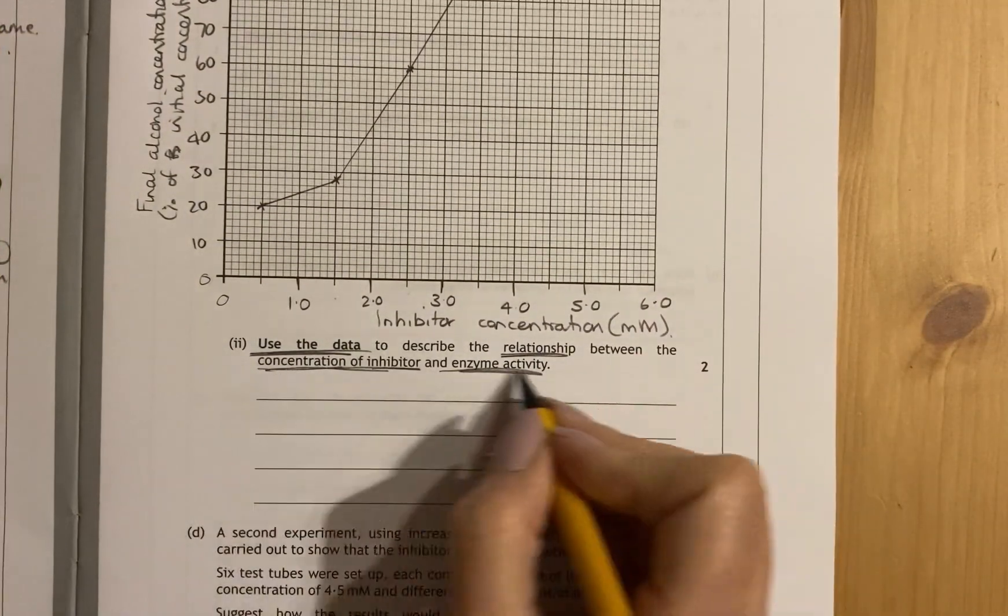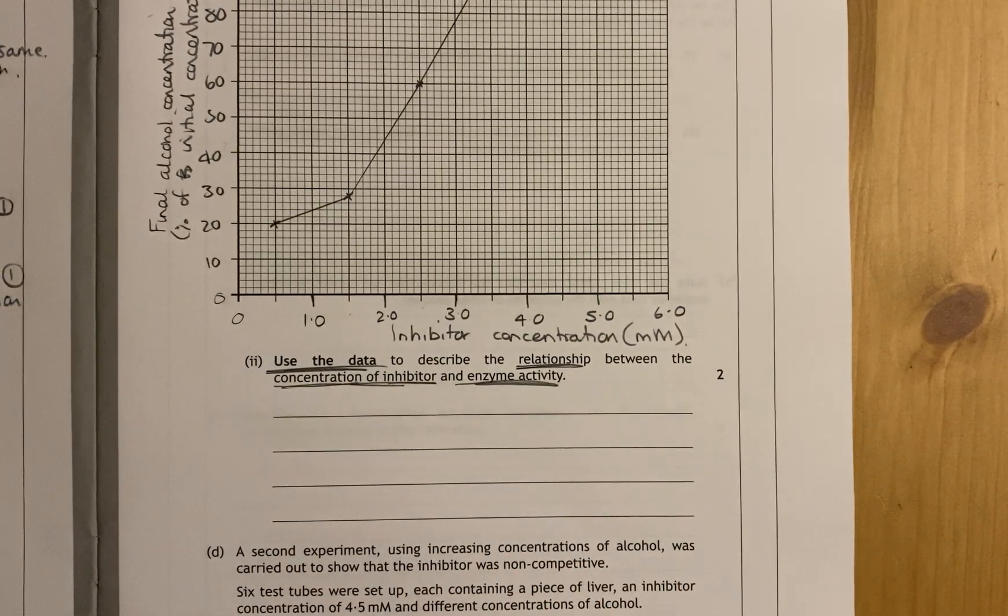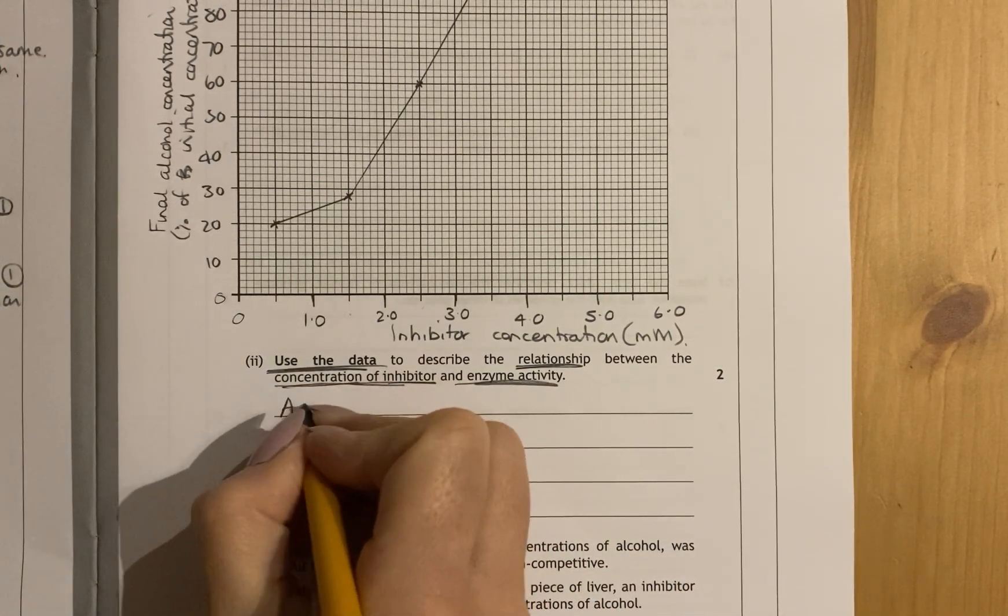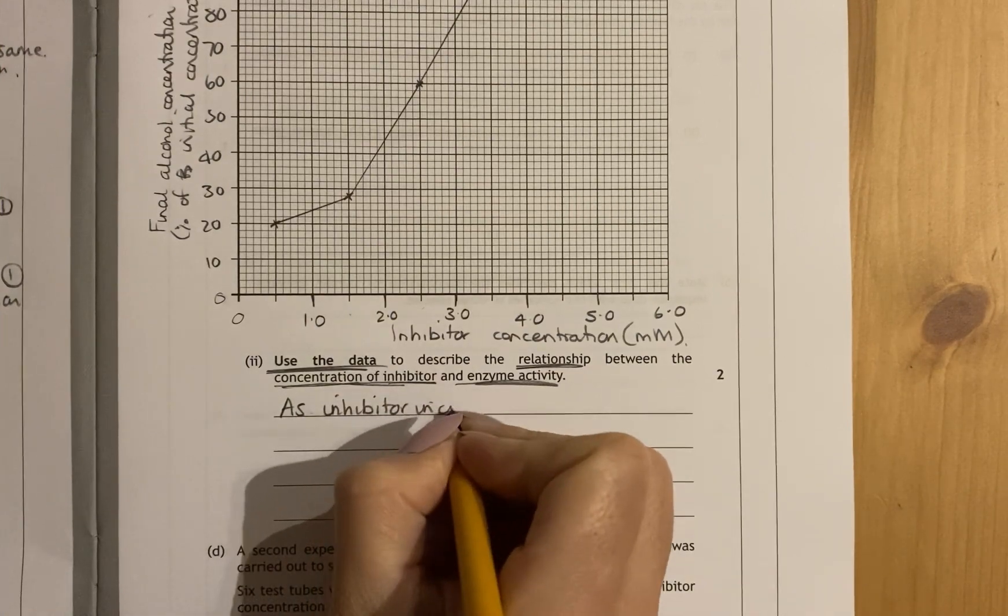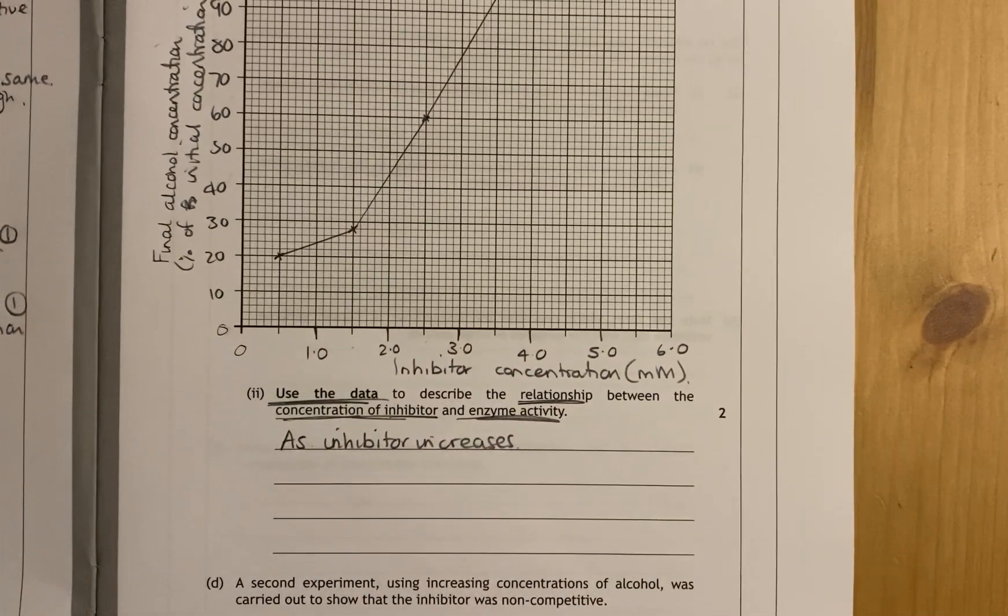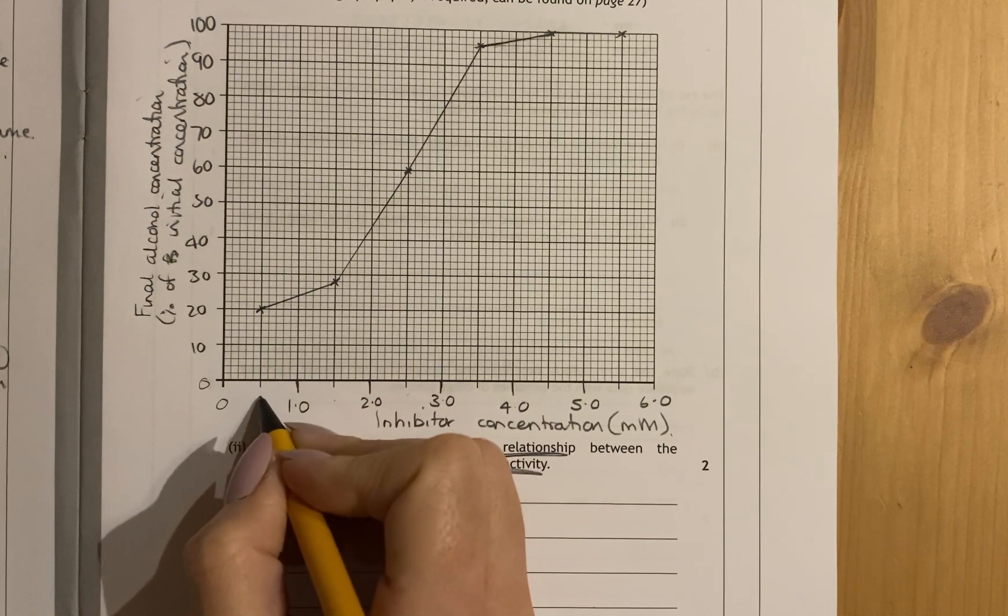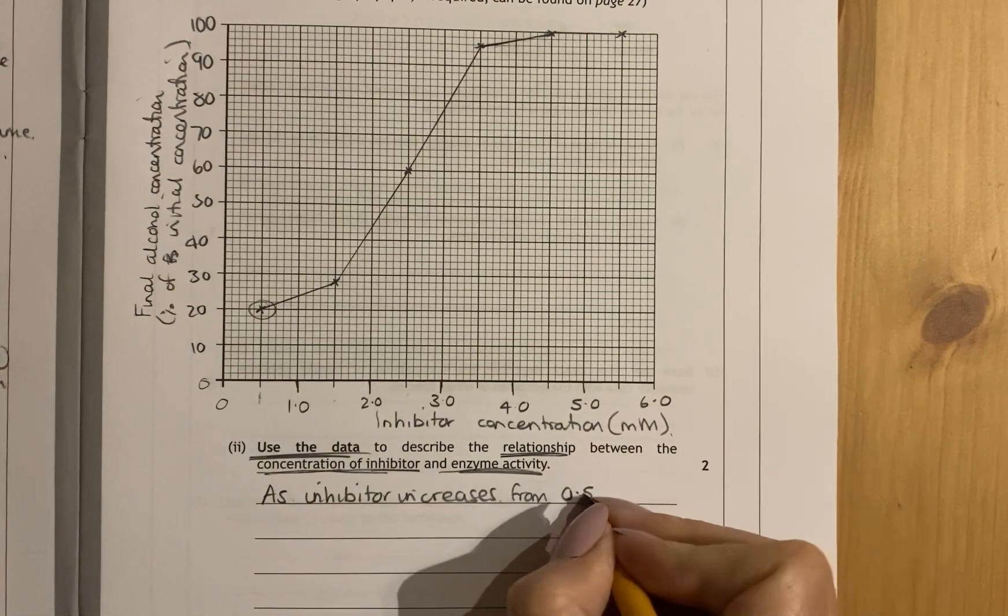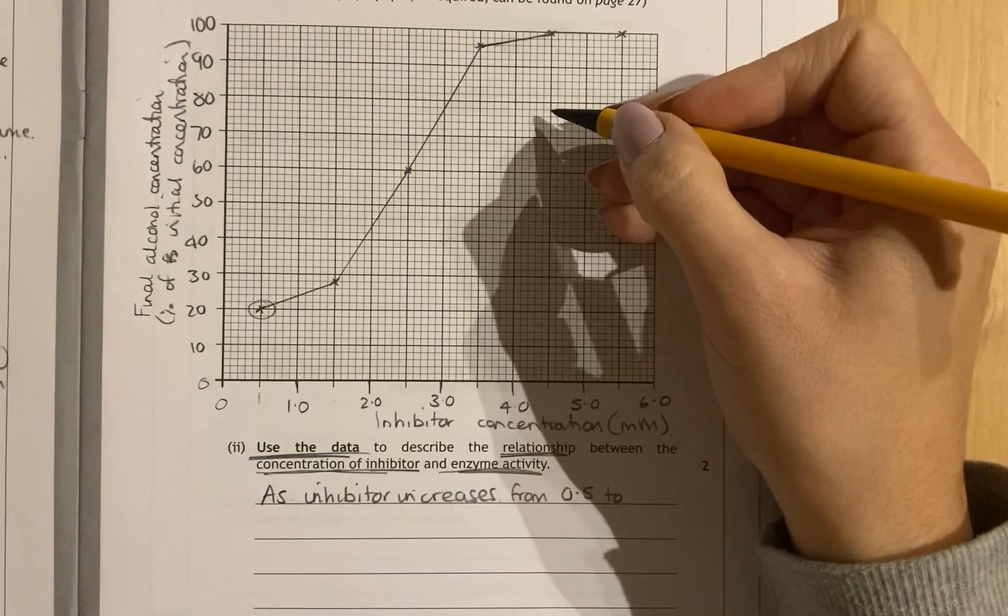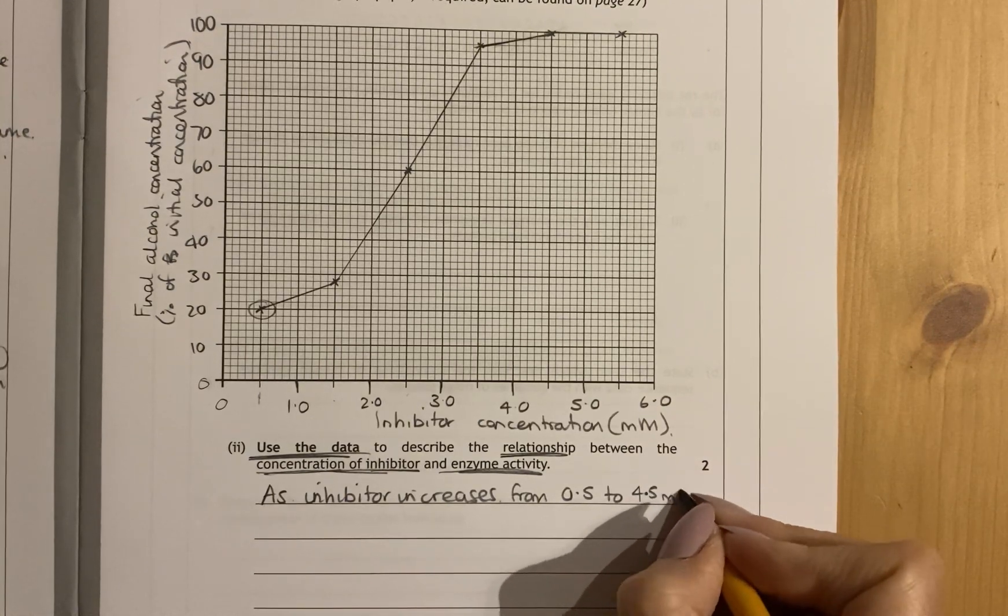So, you're going to have to include values from your x-axis, so your inhibitor concentrations, and you're going to have to relate that to enzyme activity. So first of all, you would have the same start into all these questions. So, you would say, as something increases, and what they're changing is inhibitor concentration. So, as inhibitor concentration increases from a couple of points, you'll have to say something about it. So, this inhibitor concentration is 0.5 here, where you've got your first value. So from 0.5 to your next point where it stops and changes, which is 4.5 millimoles.